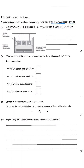We use a mixture with cryolite because all mixtures generally have a lower melting point than something that is pure — so adding the cryolite lowers the melting point of the aluminium oxide. Because the melting point has been lowered, less energy is needed for the electrolysis process.